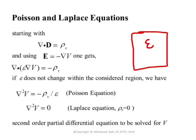If there is no volumetric charge density — if there is only surface charge density — then Nabla squared V equals zero, and this equation becomes Laplace's equation. Both equations are very well known in electromagnetics and in semiconductor theory. They are used over and over again to get the potential, and from the potential you can get the electric field and then other quantities. Chapter 6 is mainly about these two equations — how to solve them, and the different approaches for solving them.